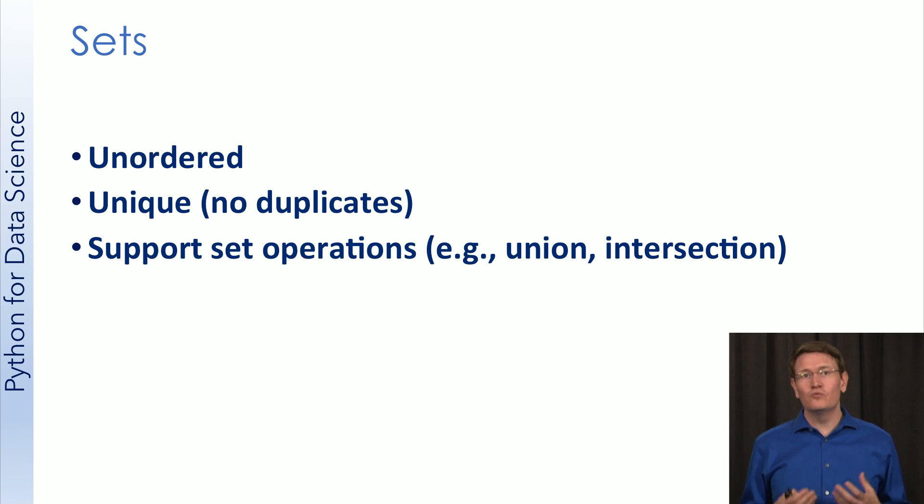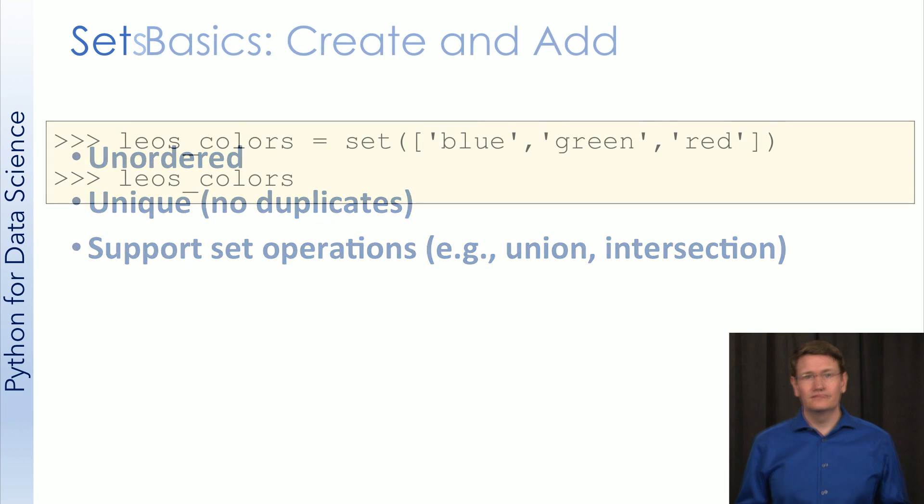Let's do some examples to see why sets can be handy. We can create sets by using the keyword set and then pass as an argument to set a list of the values that we want to have in the set. Here we're passing a list of my favorite colors. This will produce the set of colors.